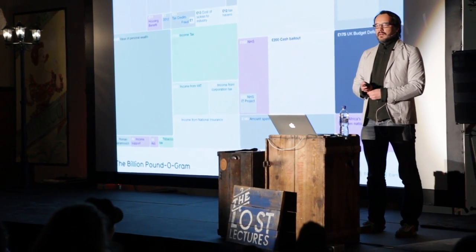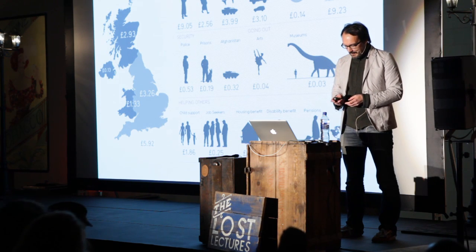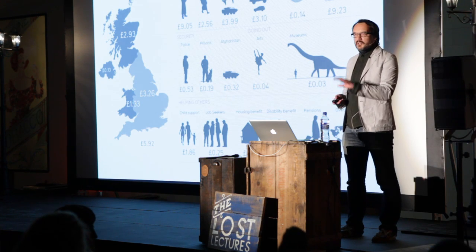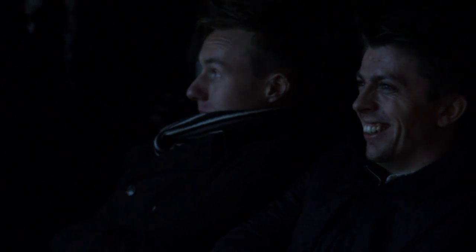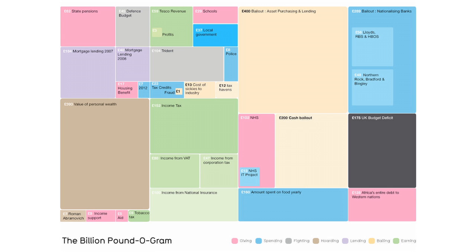I took the same numbers and converted them into a metric I think we can relate to: how much you contribute as an average taxpayer per day. You probably don't know what you spend every year or every month, but you definitely know how much you spend a day. In the UK, if you're an average taxpayer, you're contributing £9 a day to the NHS, £3 a day to museums, and £2.93 to Scotland. Wherever possible, try to bring the data down to earth so we can start to relate to it.